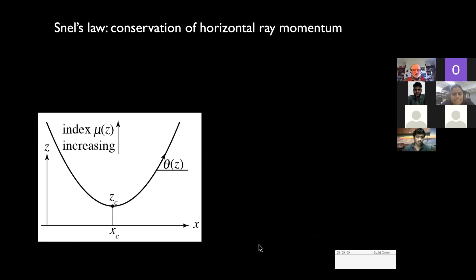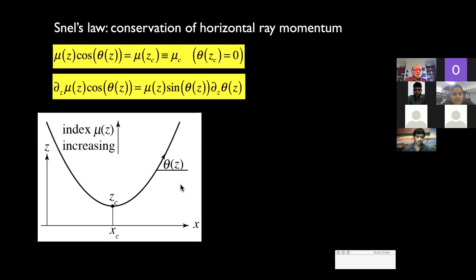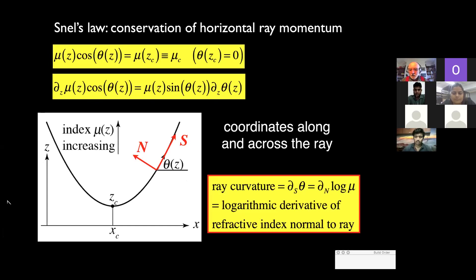Now, where does this bending come from? Well, Snell's law, conservation of horizontal ray momentum. If the refractive index is μ and the angle with the horizontal is θ, Snell's law is that μ cos θ is a constant. Now differentiate this with respect to height z. The curvature of the ray is the logarithmic derivative of the refractive index perpendicular to the ray.